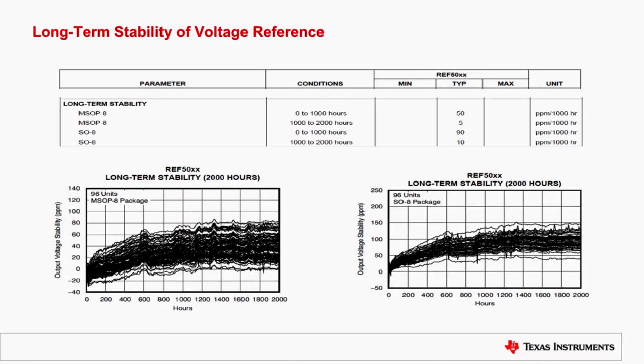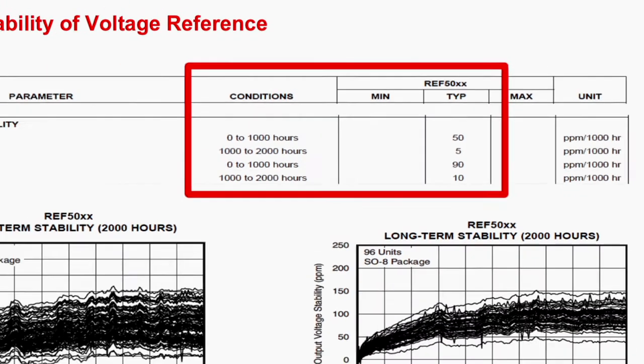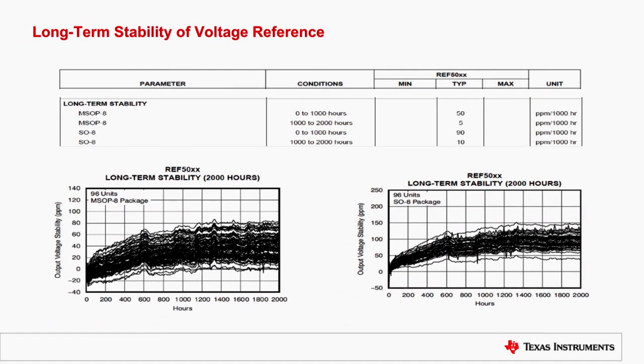Most of the long-term stability specs are not shown in a datasheet. Notable exception is how voltage reference changes over time. In this case, you may see that the initial value changes much faster initially and then becomes much more linear. In PDS, it's shown that the initial reference voltage changes by 50 ppm in the first 1,000 hours, but only 5 ppm in the second 1,000 hours. This is very typical of all parameters how they change over the life of a product.